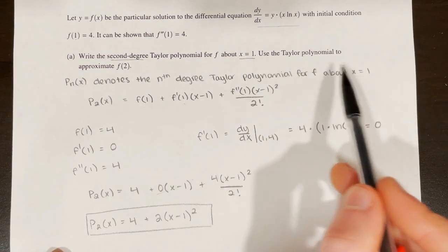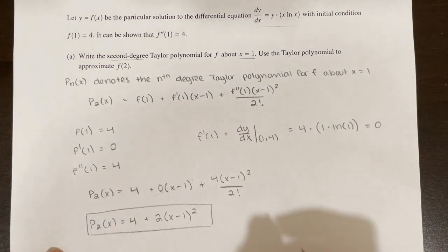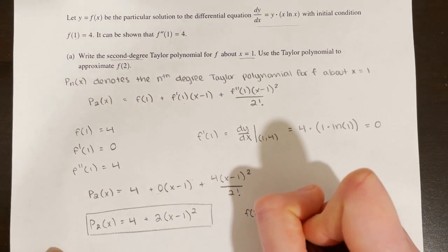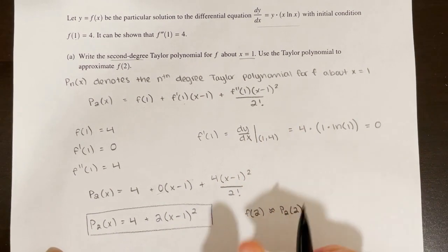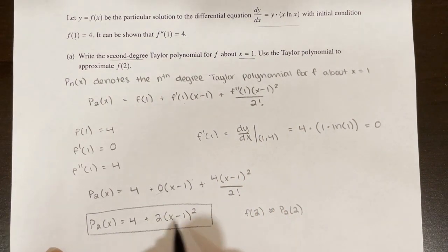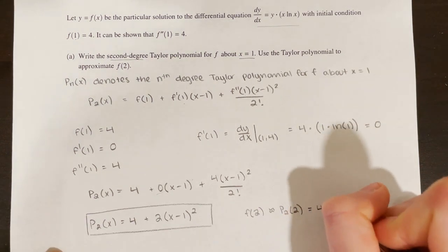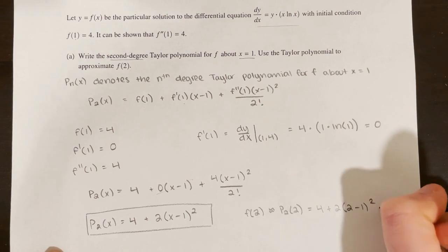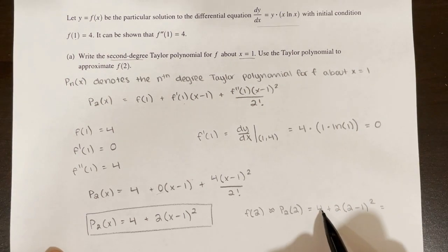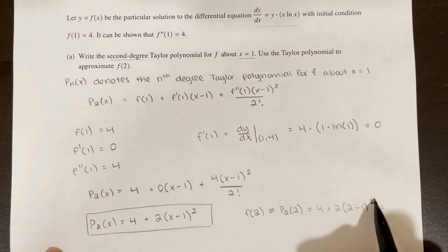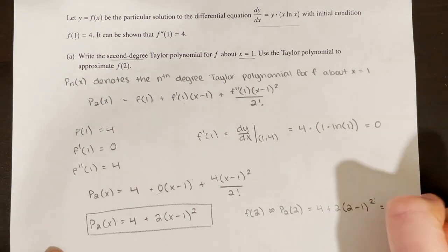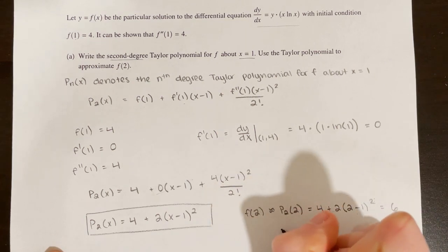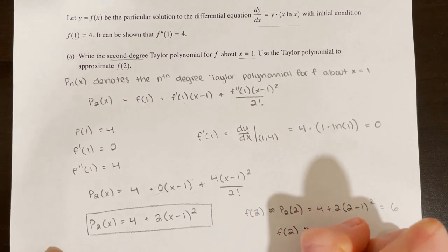It also asks us to use this Taylor polynomial to approximate f of 2. So f of 2 is approximately p sub 2 of 2, and we plug in 2 everywhere we see x: 4 plus 2 times 2 minus 1 squared equals 4 plus 2 times 1 squared equals 4 plus 2 equals 6. So f of 2 is approximately 6.